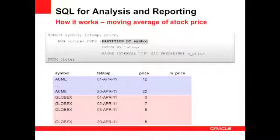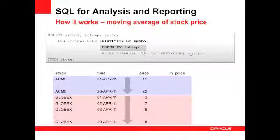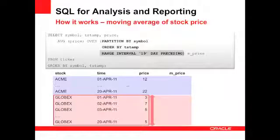Now the data is grouped together. The next step is to order the data set, which for the purposes of the moving average needs to be based on the time column. Now the data is correctly grouped and ordered.